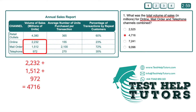I hope you've had a go. What was the total volume of sales in millions for online, mail order and telephone channels combined? Here we have a table titled Annual Sales Report. These are the different columns, and the column we need to work with is volume of sales, because we're trying to work out the total volume of sales for online, mail order and telephone.